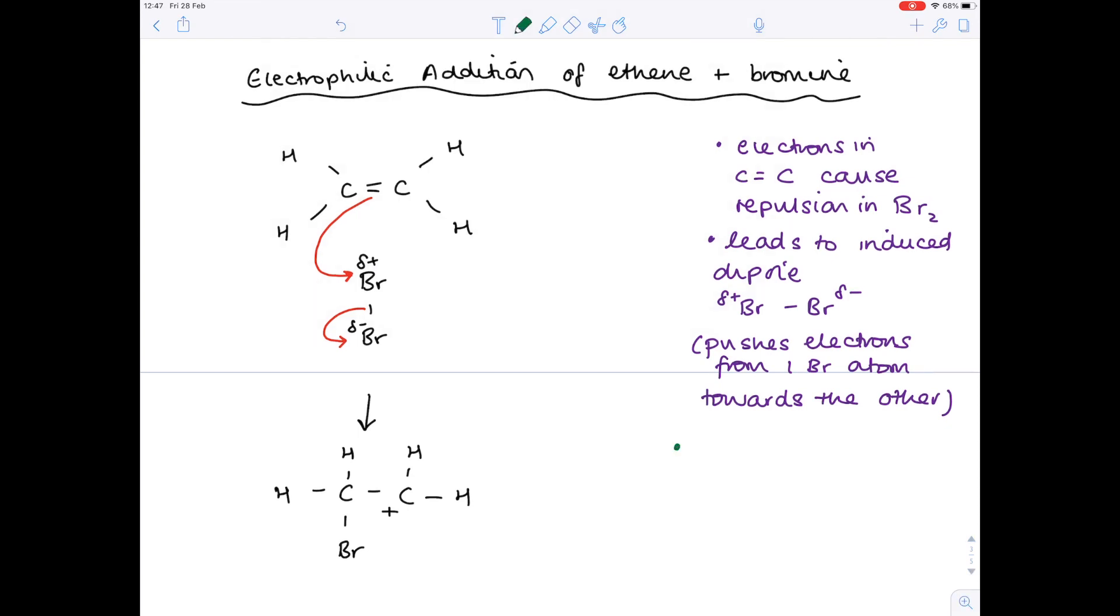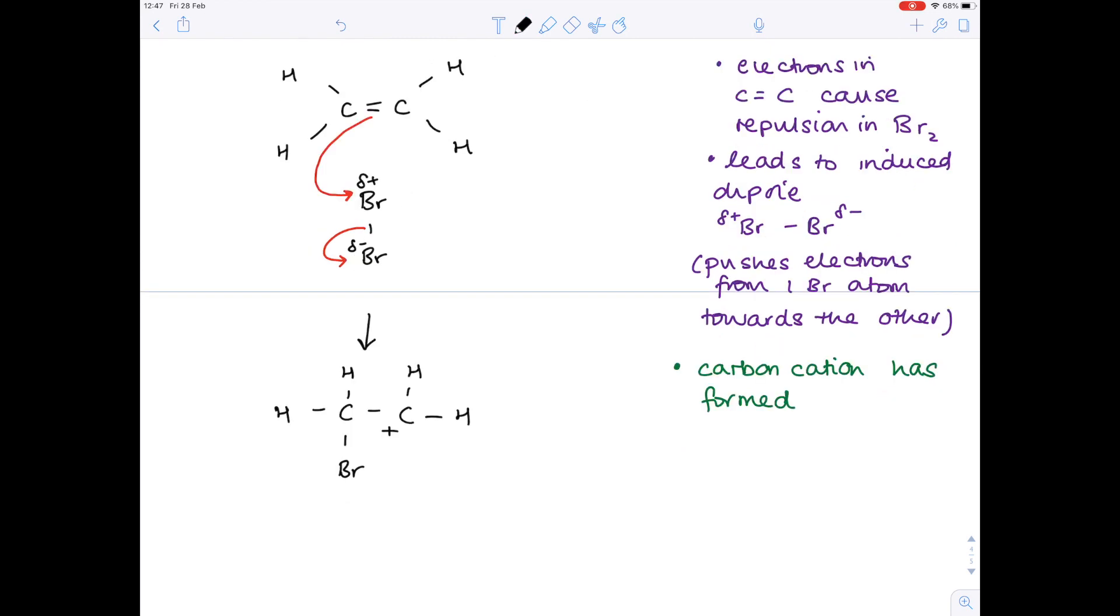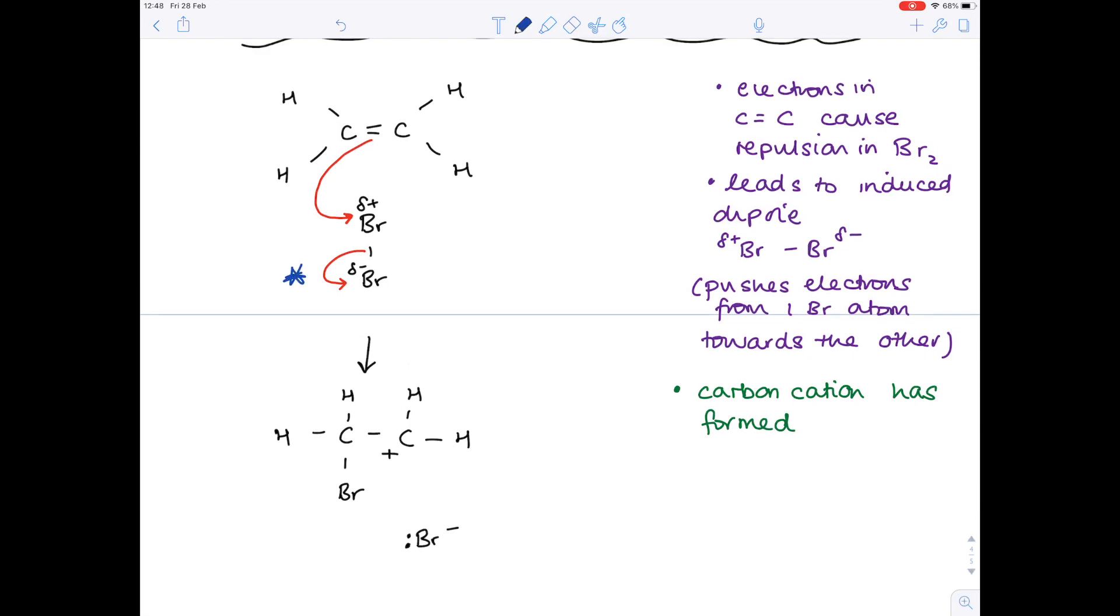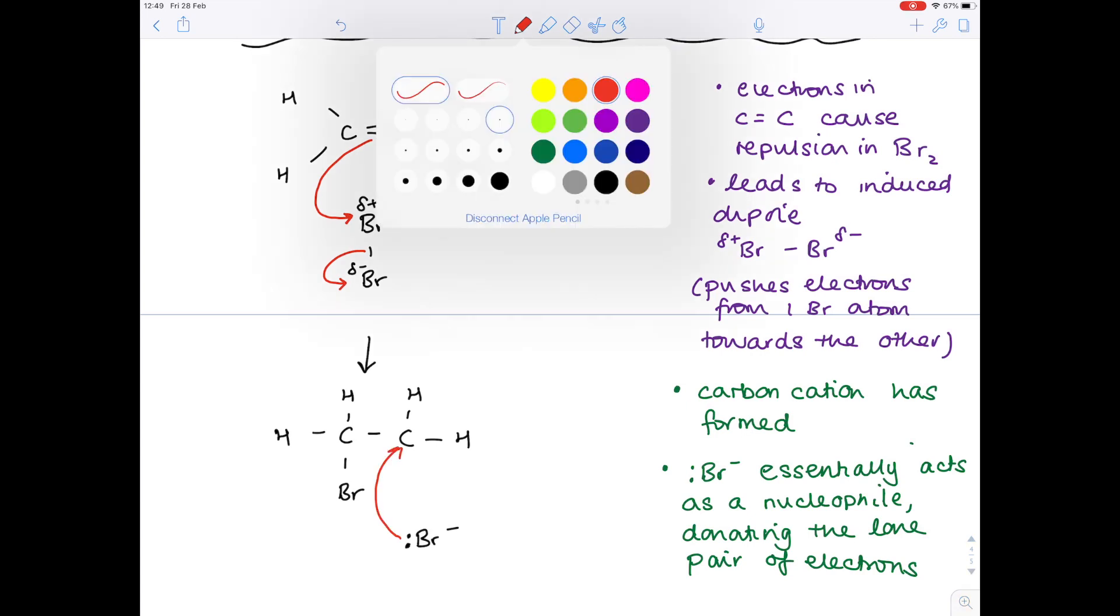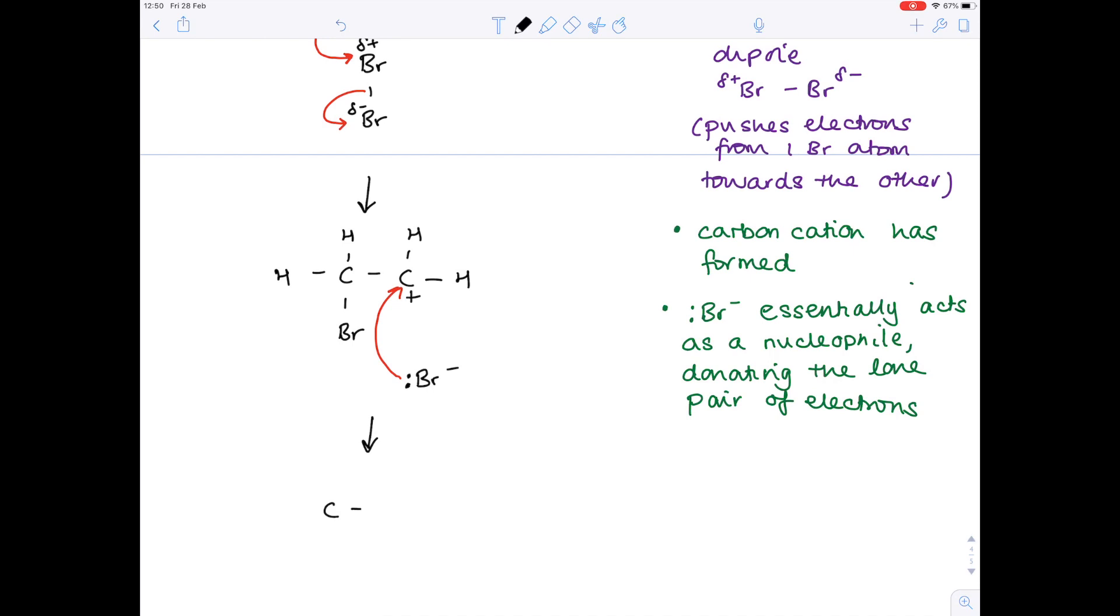I'm just making a little note on the right hand side that a carbocation has formed. What's missing? One of the bromine atoms hasn't been accounted for. This will now exist as a Br minus, and it has a lone pair, because remember it gained electrons up here in this step. So the Br minus with the lone pair is effectively acting as a nucleophile, and it can donate the lone pair of electrons. We're going to show it doing that with another curly arrow.